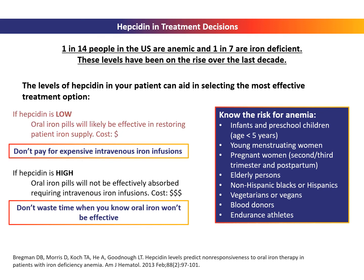If hepcidin is low, oral iron pills will be sufficiently absorbed to correct the deficiency. However, if the levels are elevated, oral iron will not be effective, requiring the administration of IV iron treatment. In this way, hepcidin can save patients money if they are known to be responsive to oral iron pills, or it can save time by preventing a failed attempt to take iron pills and directing treatment to IV iron.